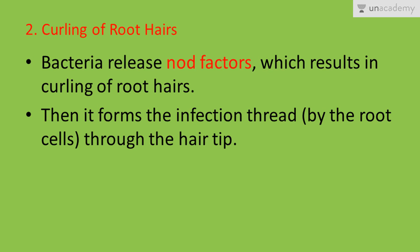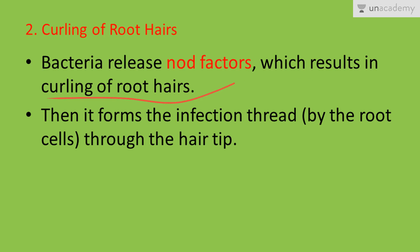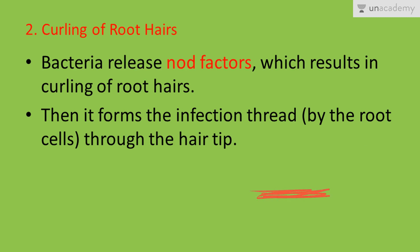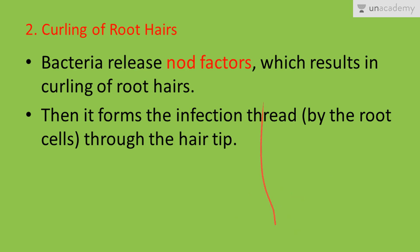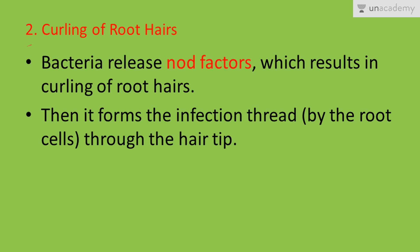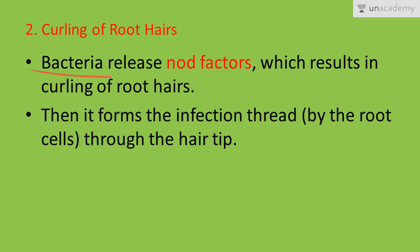Then curling of root hairs occurs. The bacteria release a factor known as the nod factor, which results in the curling of the root hair. Up to this point, the rhizobium bacteria have made contact with the roots of the leguminous plants, and the formation of nodules begins.